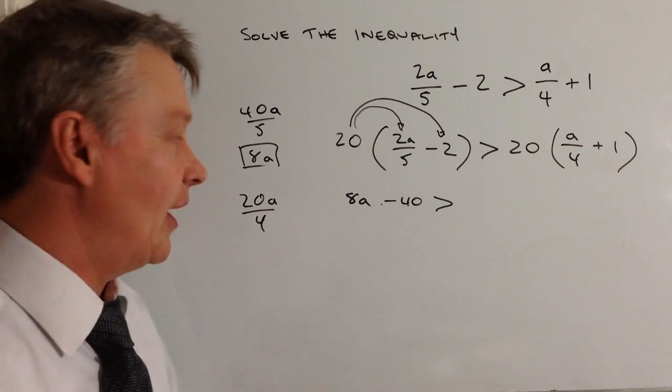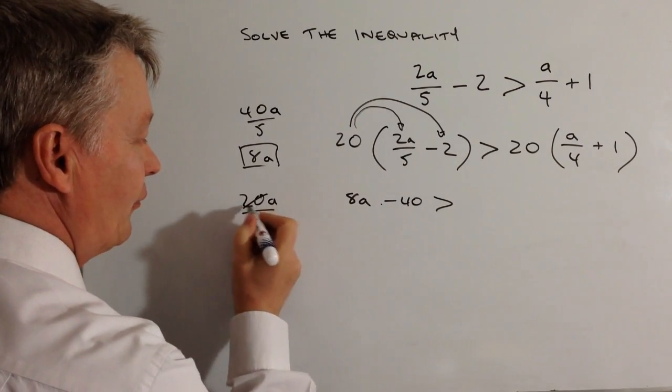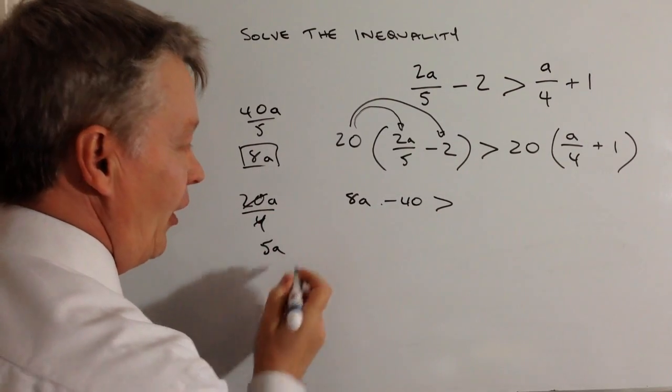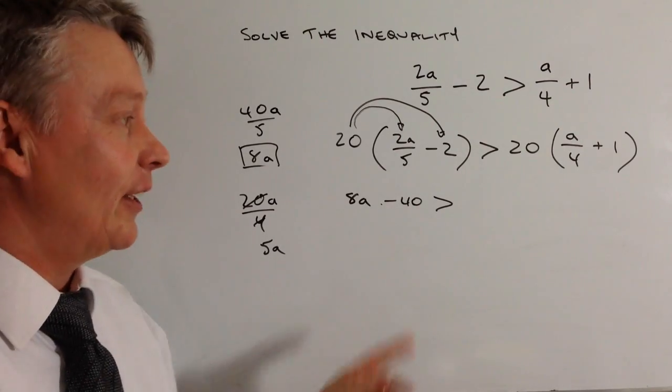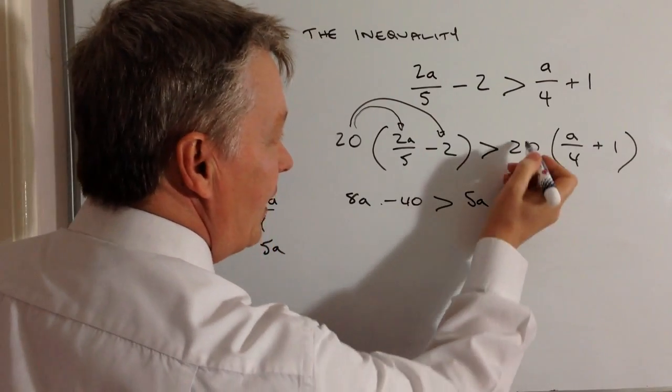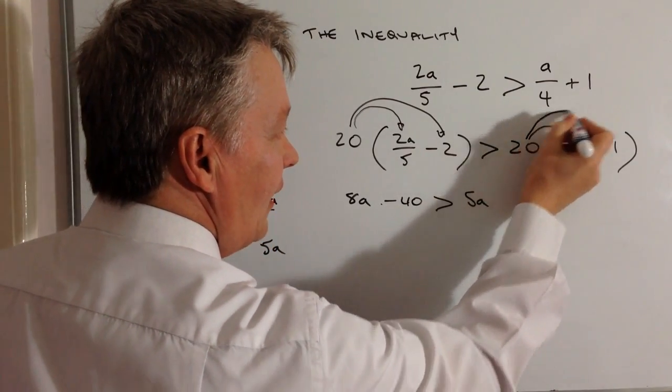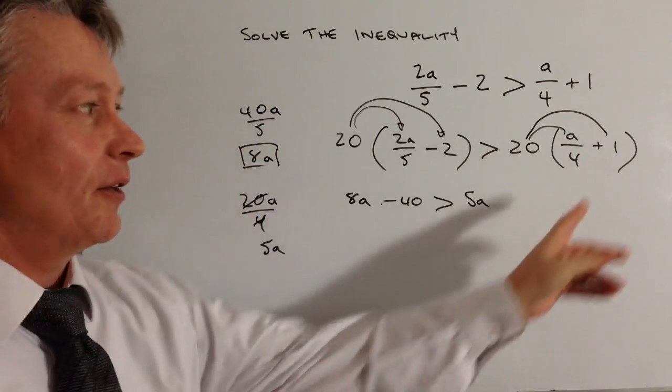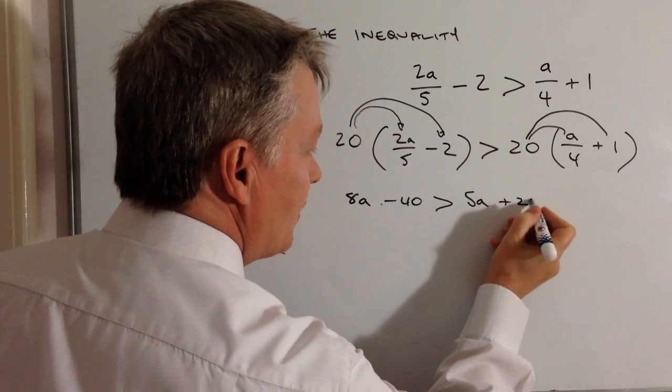I'm going to simplify that further by dividing by 4, which gives 5a. That's excellent because I've lost the denominator. Then the last term is 20 times 1, which is plus 20. So we have 8a - 40 > 5a + 20.